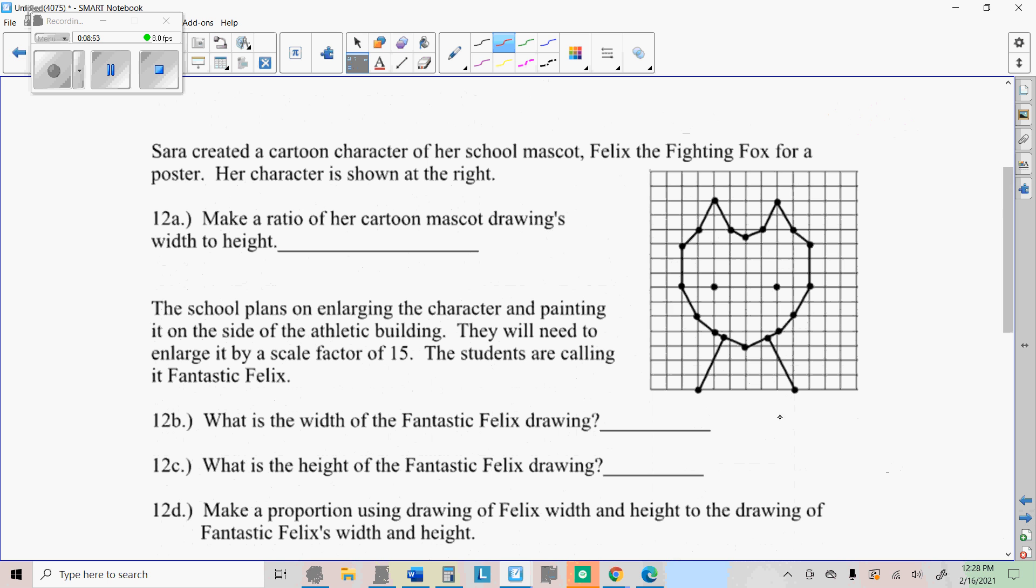So Sarah created a cartoon character of her school mascot, Felix fighting fox for poster character shown at right, make a ratio of her cartoon mascot drawing's width to height. So to do that, the width, we're going to measure from here to here. So the outside width from there to there, and we're just going to count those squares. So it's eight. And then the height, we're going to go from the bottom, so right here, up to the top of the ears right there. And we're going to count two, four, six, eight, ten, twelve. Looks like thirteen.